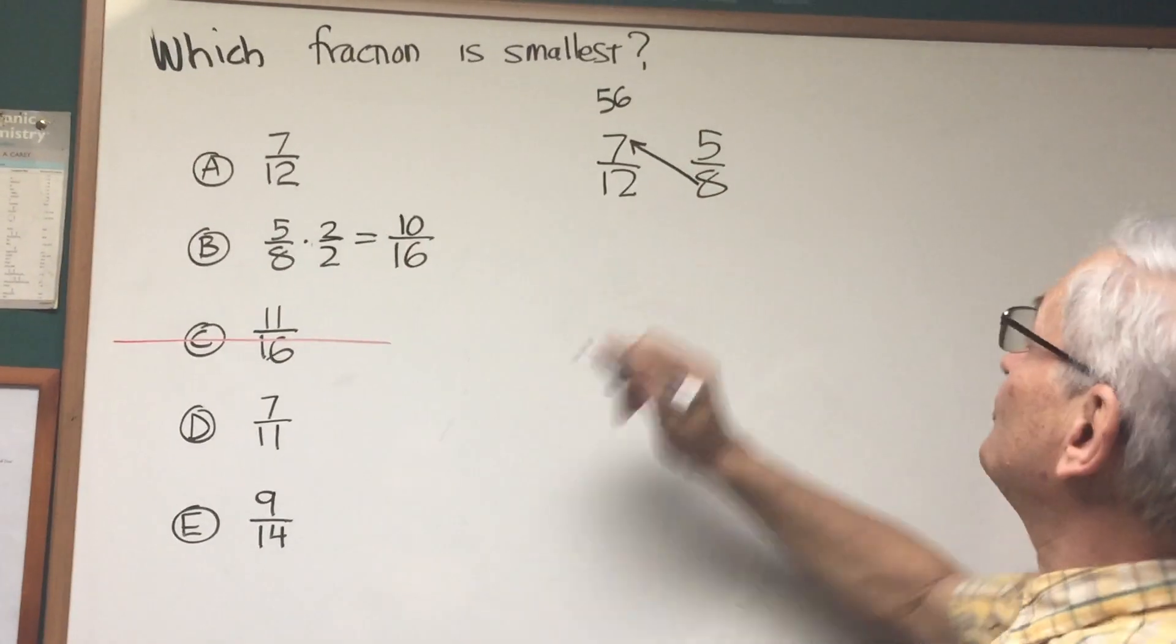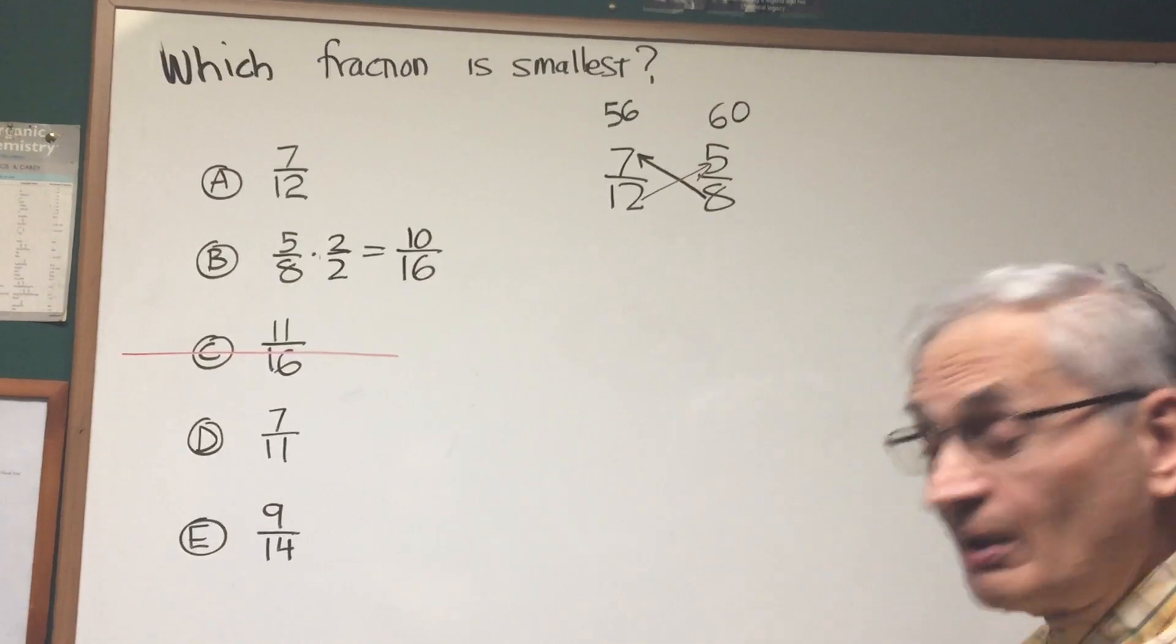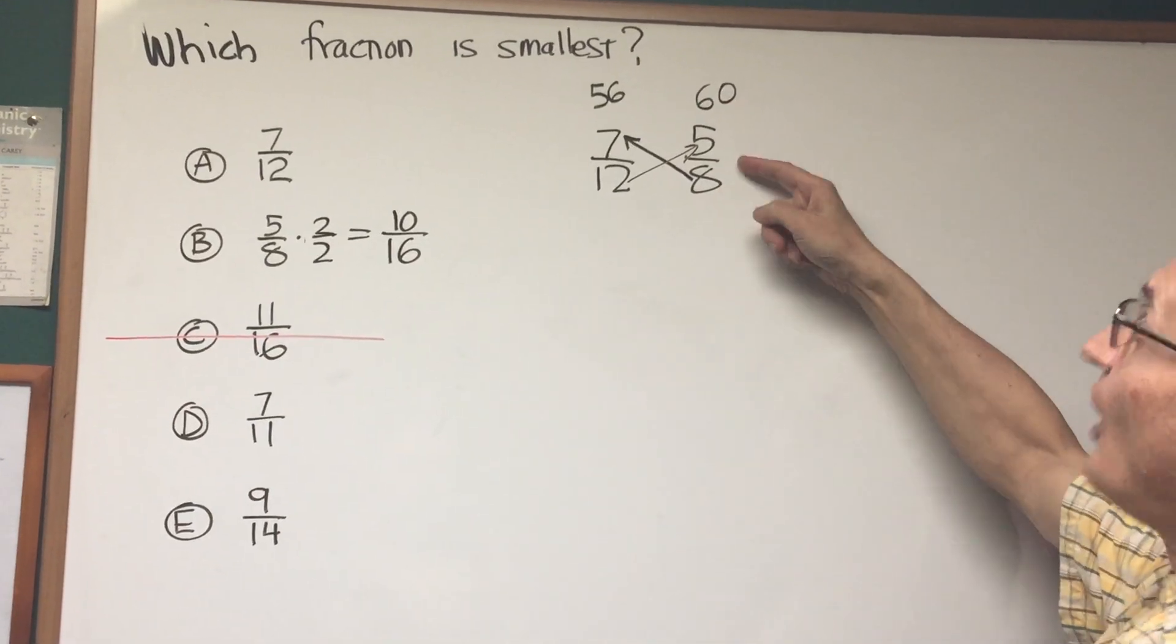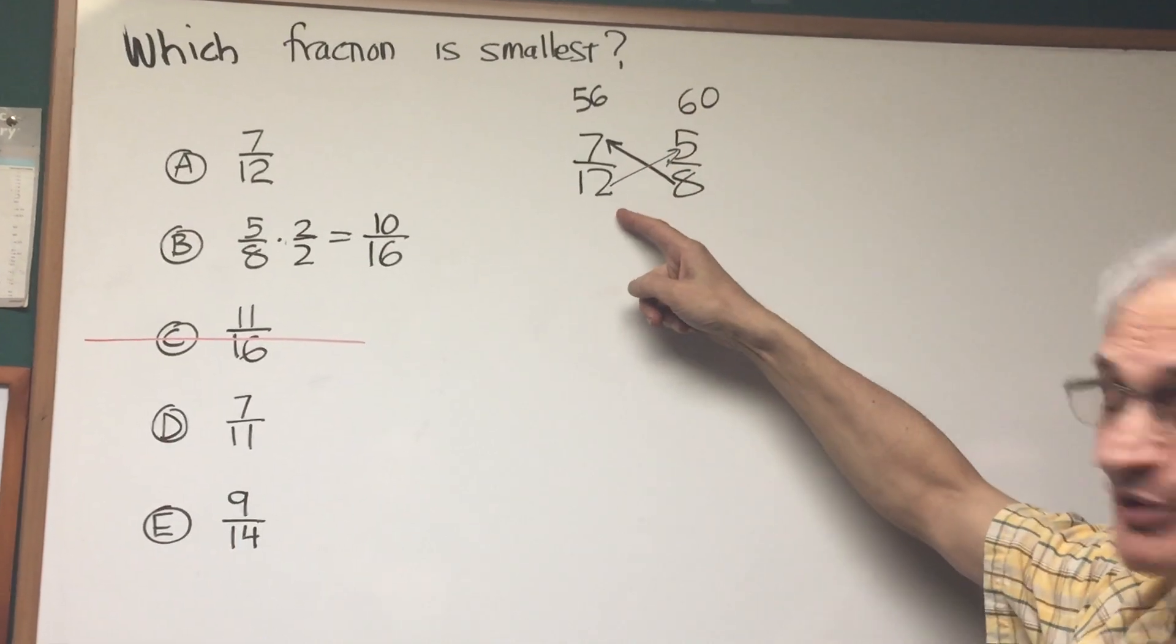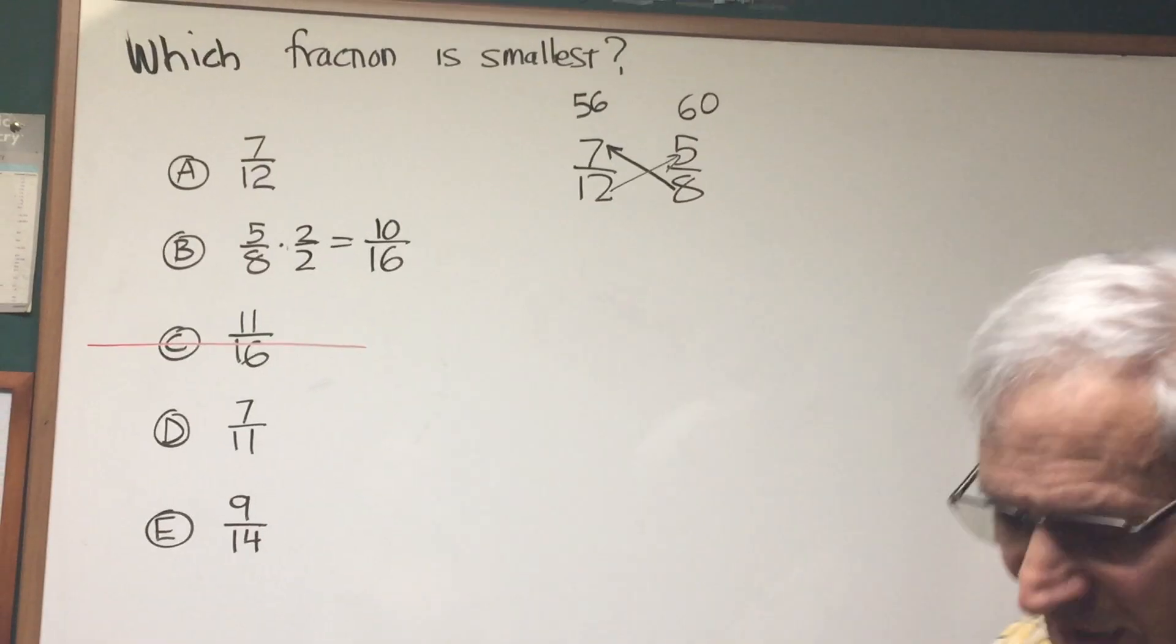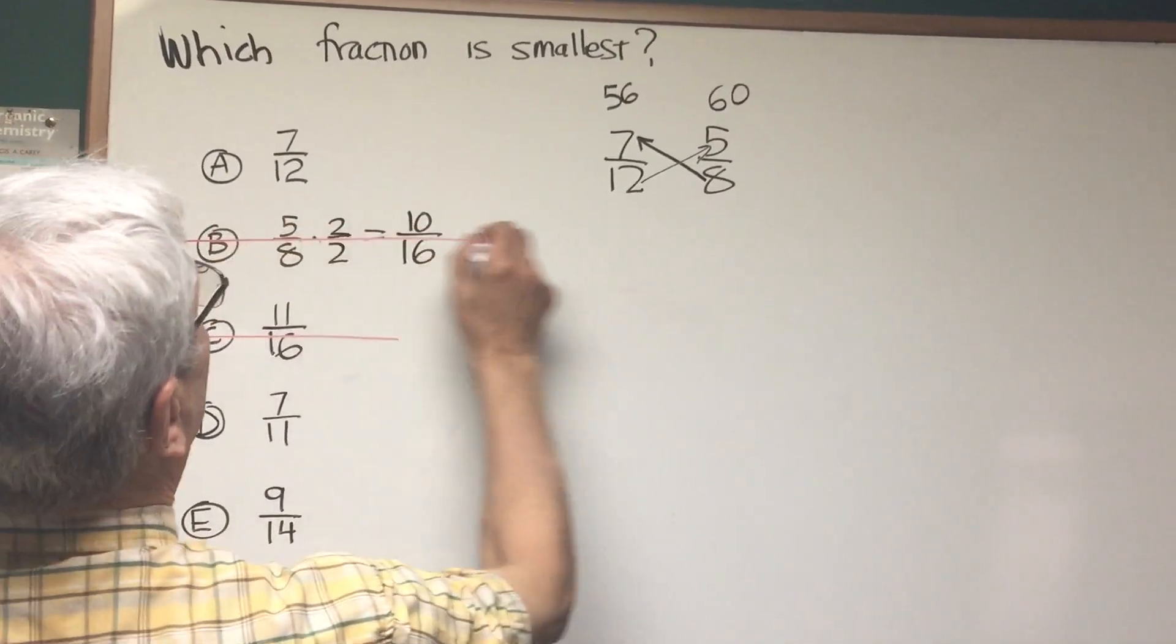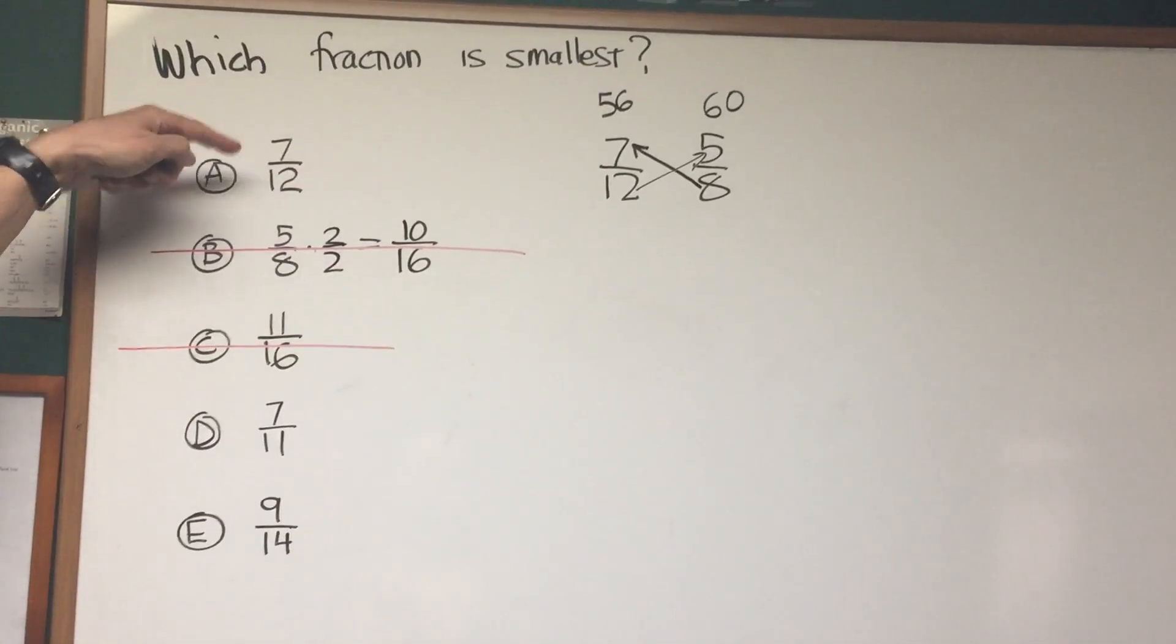Then do the same in the opposite direction. Take the denominator here. 12 times 5 is 60. The larger number lies over the larger fraction. The smaller number lies over the smaller fraction. So 7 twelfths is smaller than 5 eighths. So now at this point, I can cross out the second fraction, 5 eighths. So now we're just dealing with three remaining ones.